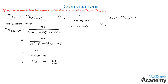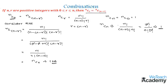We write nCn using the formula as n! divided by (n−n)! × n!. This gives us n! divided by 0! × n!. We can cancel n! in the numerator and denominator, which gives us a value of 1.